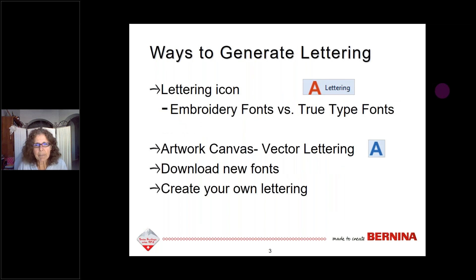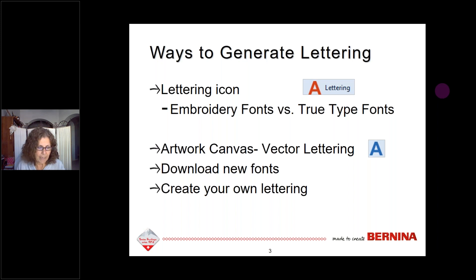When we generate lettering, we have the lettering icon in the digitized toolbox. With this, we can generate embroidery fonts or TrueType fonts. We can also go to Artwork Canvas — the Corel side of the software — and through the vector lettering icon, access TrueType fonts. We also have the possibility of downloading new fonts from font websites and installing them on our computer, then accessing those through TrueType fonts. And of course, you can create your own lettering by digitizing it.